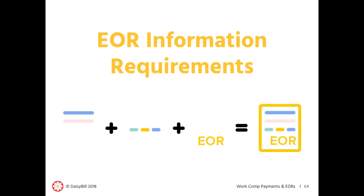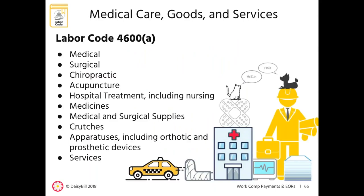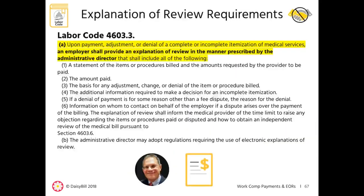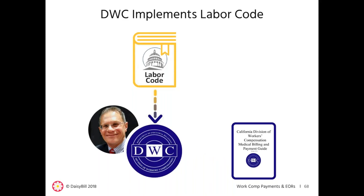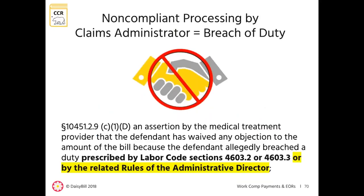Now we move on to EOR information requirements. These EOR requirements apply to all EORs issued by a claims administrator — with separate requirements for med-legal EORs — and apply to all original bills for medical treatment and services under Labor Code 4600. Labor Code 4603.3 requires an employer to provide an explanation of review in the manner prescribed by the administrative director. To implement the labor codes, the DWC and its administrative director issue regulations and rules, including those in the DWC Medical Billing and Payment Guide.